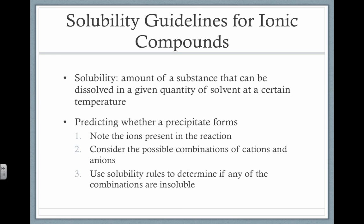For predicting a precipitate, basically when we put together our products in the reaction, once we put together our cations and our anions, we apply the solubility rules — which you were supposed to memorize over the summer — to determine whether or not we have an insoluble product. Usually you're only going to end up with one insoluble product, not two.